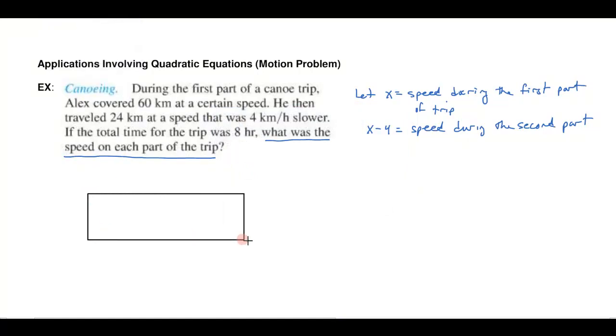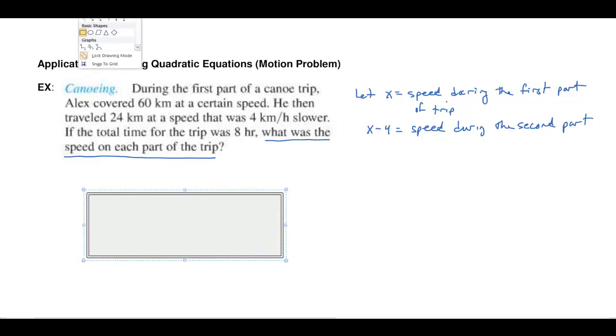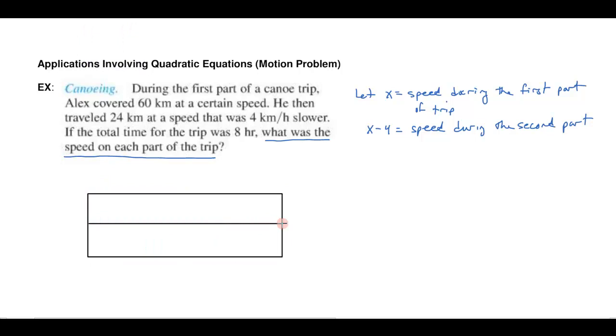So let's draw a little chart, a little box here. And I have the motion during the first part of the trip and then I have the motion during the second part of the trip. And I know that each of those parts has its own rate, its own time, and its own distance. And I know that those variables are related to one another because rate times time always equals distance.